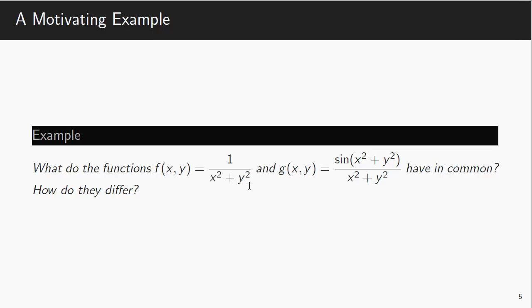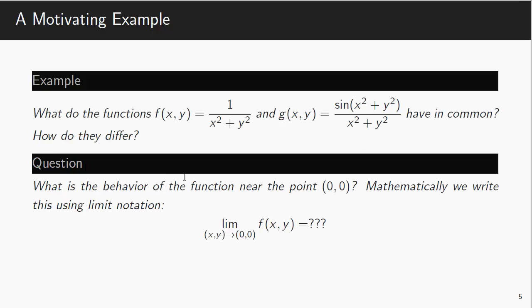So maybe that's one way that they differ. So what we might be interested in is, can we quantify that difference? What's the behavior of the function near the point (0,0)? So mathematically we can write this using limit notation. So we say the limit as (x,y) approaches (0,0) of the function f(x,y) equals, and we don't know what it is. And similarly we could evaluate this with g(x,y).